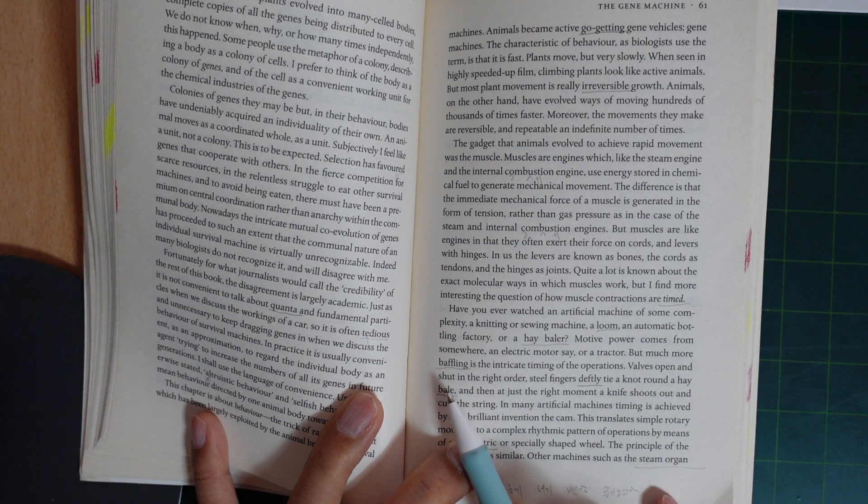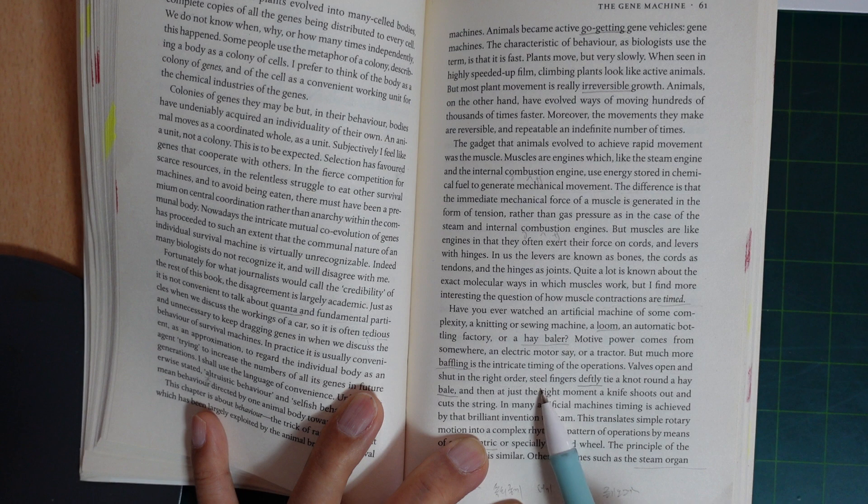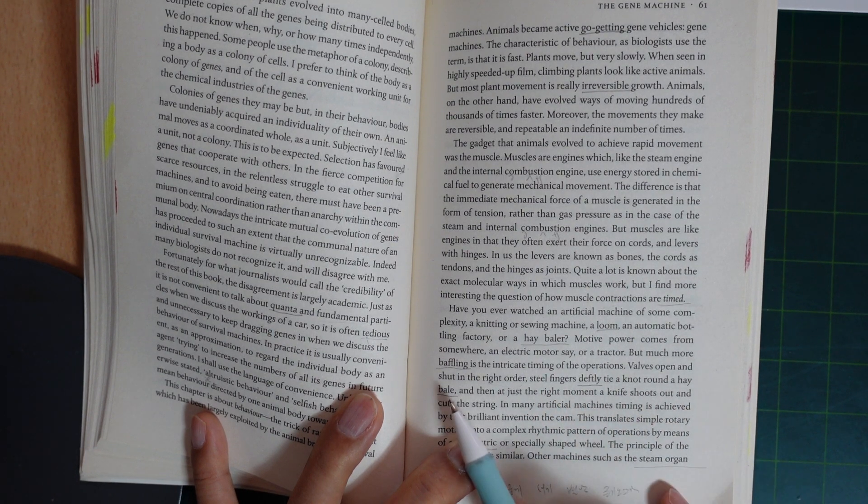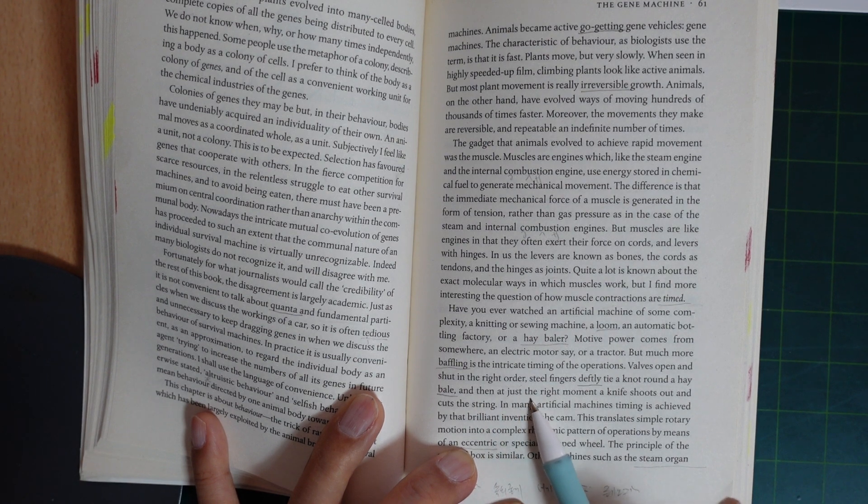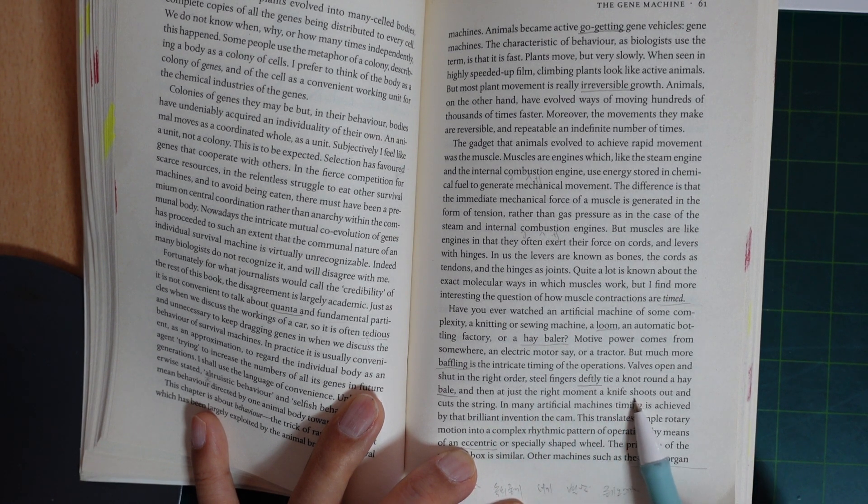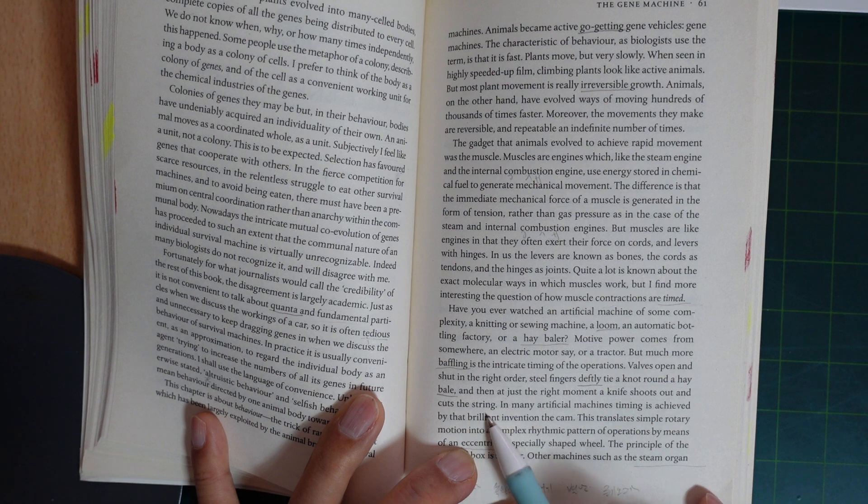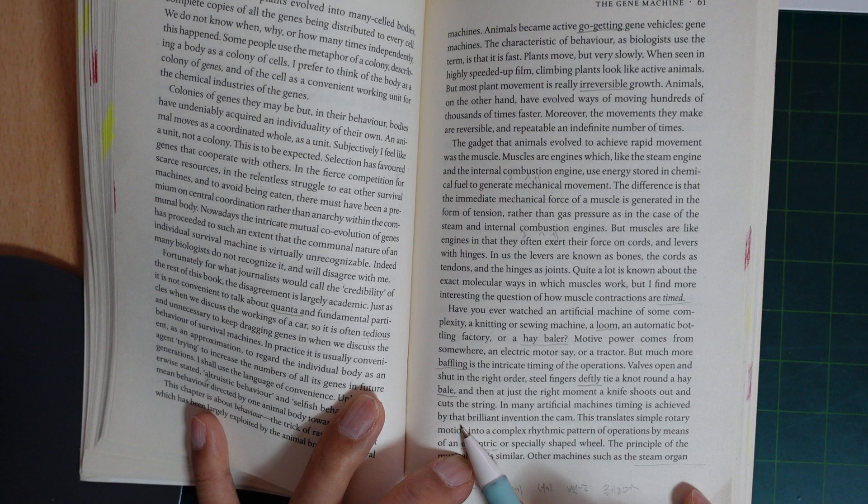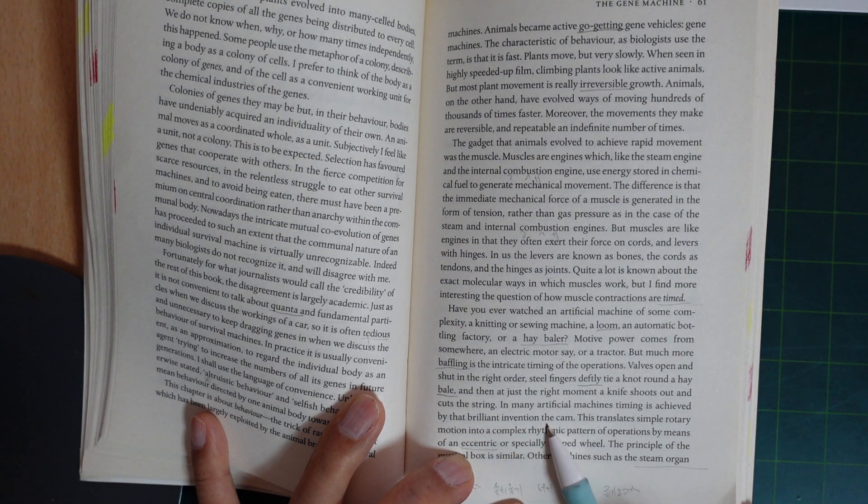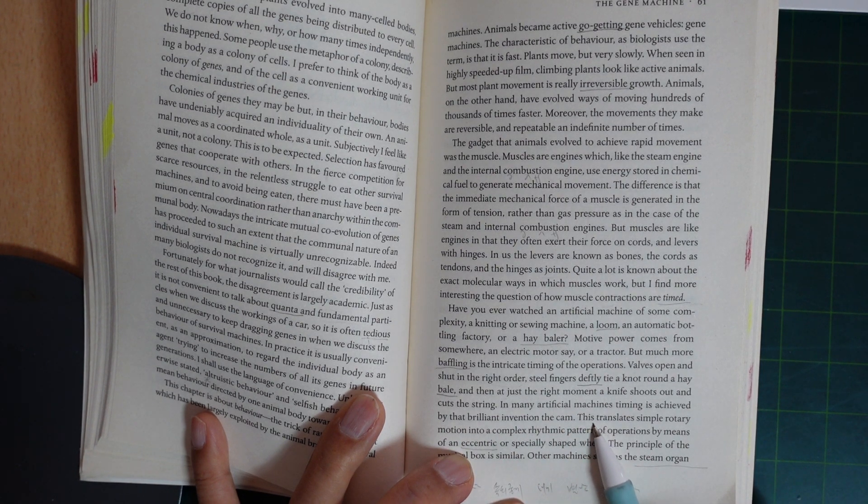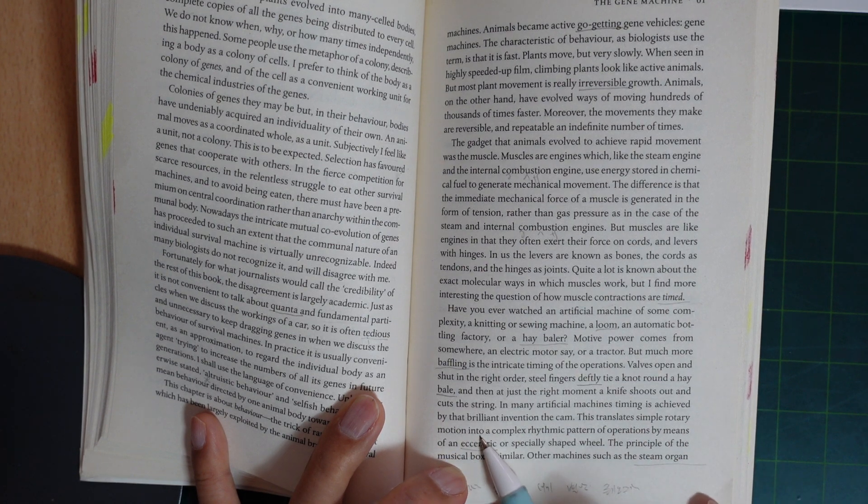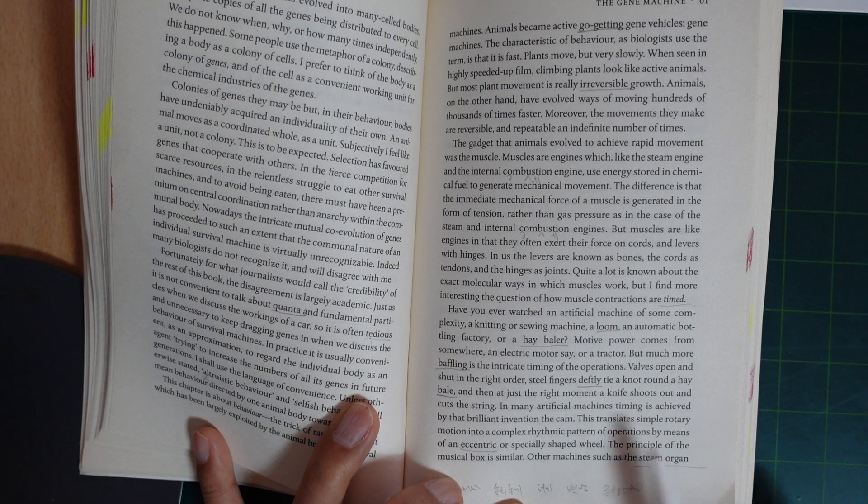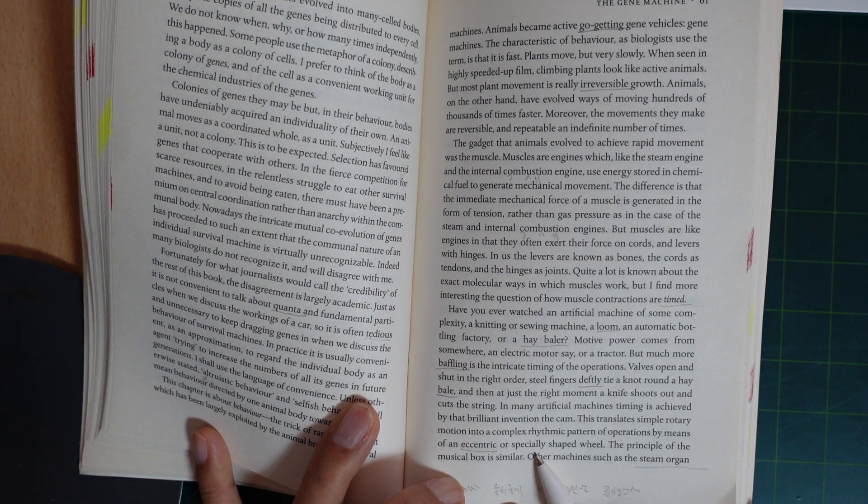But much more baffling is the intricate timing of the operations. Valves open and shut in the right order. Steel fingers deftly tie a knot around the hay bale at the right moment, or a knife shoots out and cuts the string. In many artificial machines, timing is achieved by the brilliant invention, the cam. This translates simple rotary motion into a complex rhythmic pattern of operations by means of an eccentric or specially shaped wheel.